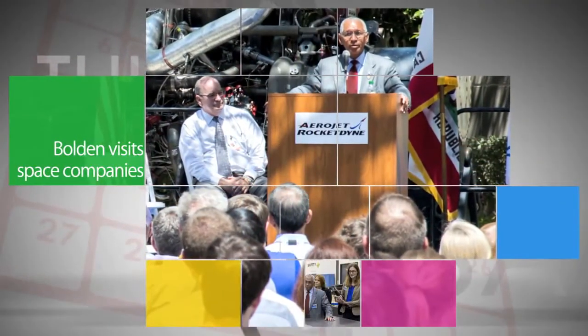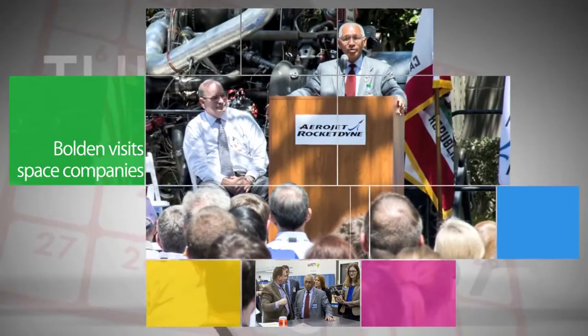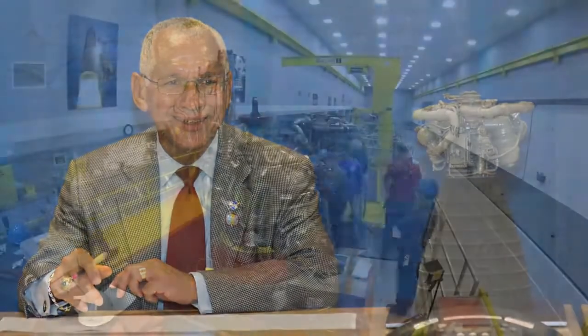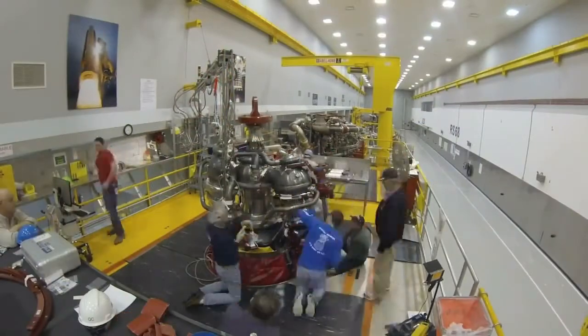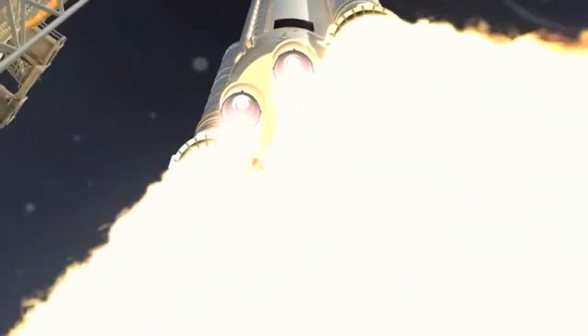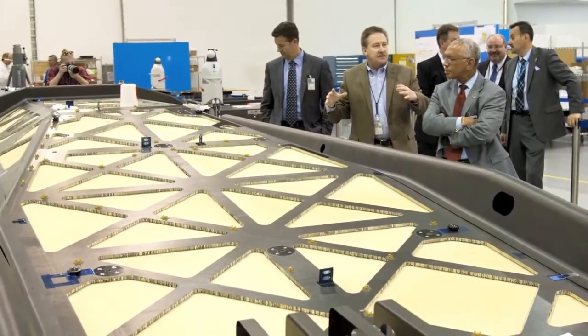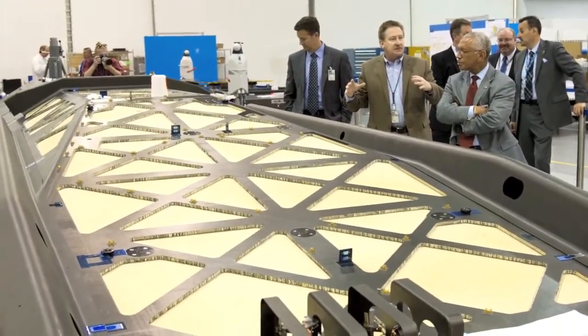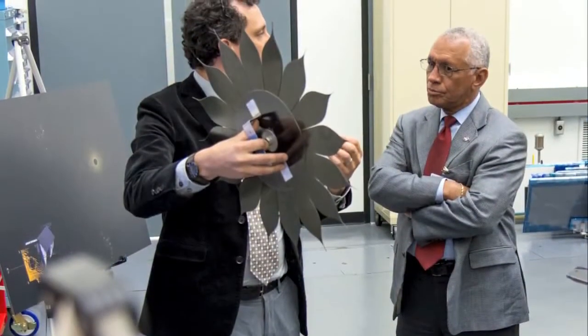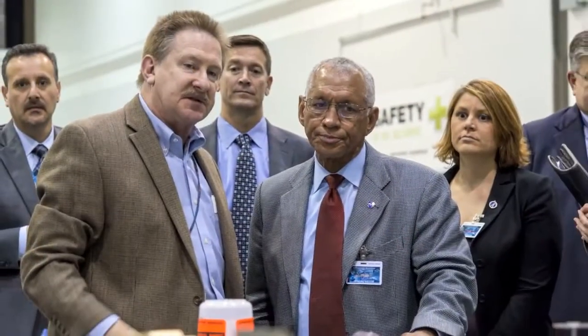NASA Administrator Charlie Bolden visited Aerojet Rocketdyne's facility in Southern California on May 28. While there, Bolden was briefed on work being conducted by the company on the propulsion system for NASA's Space Launch System rocket and Orion spacecraft. That same day, the administrator also visited the nearby headquarters of Northrop Grumman Aerospace Systems, where parts of NASA's James Webb Space Telescope are in production.